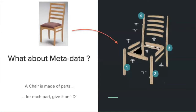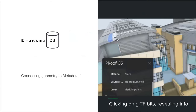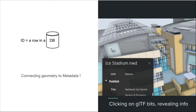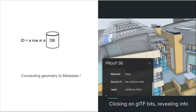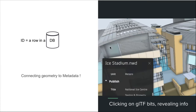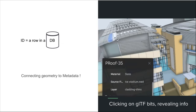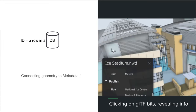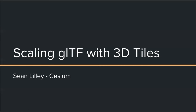The last example is metadata. Take this chair, for example — it's made up of parts and assembly, and each part has a special ID. That ID could represent something inside a database or spreadsheet. When I view that GLTF and click on one of its parts, it's somehow connected to metadata in my database. But how do I connect the geometry to this metadata, and how do I do it in a standard way? To talk more about these topics, I'd like to welcome Sean Lilley from Cesium.